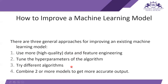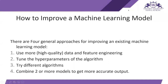To improve our machine learning model, there are four general approaches: using more or higher quality data, or feature engineering; tuning the hyperparameters of the algorithm; trying different algorithms; and combining two or more models to get a more accurate output. These are the main general approaches to improve a machine learning model.